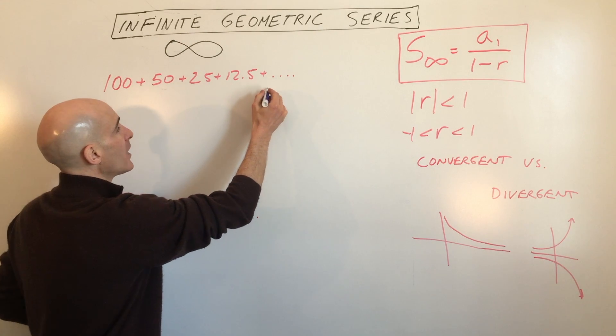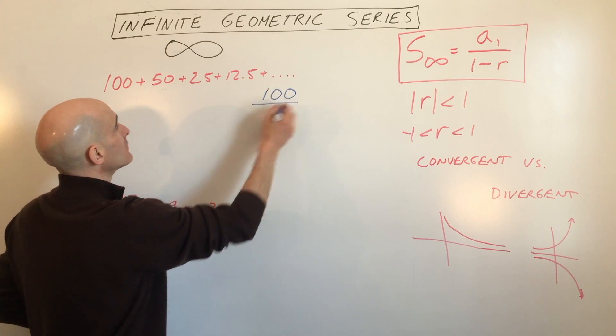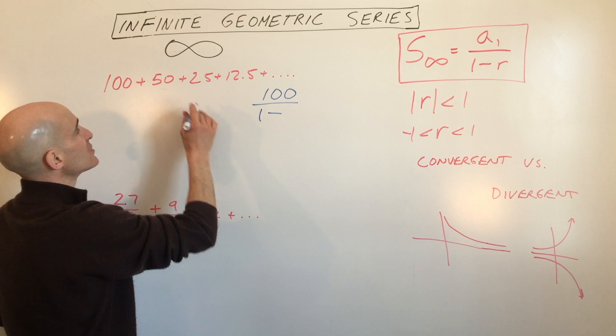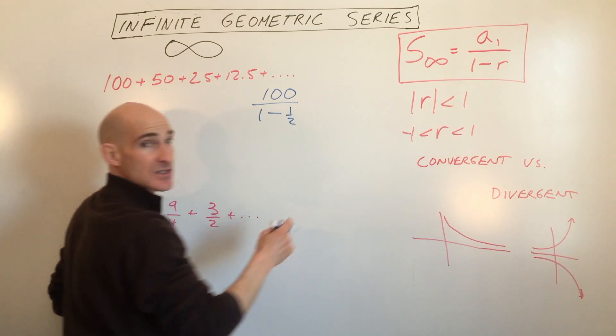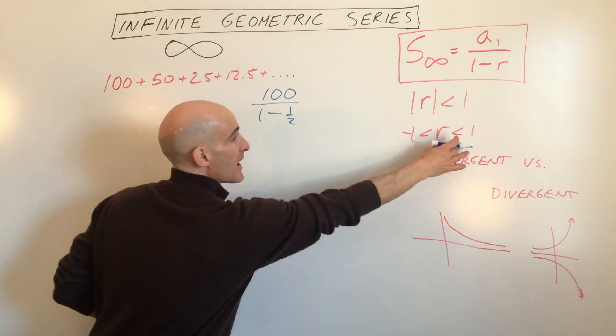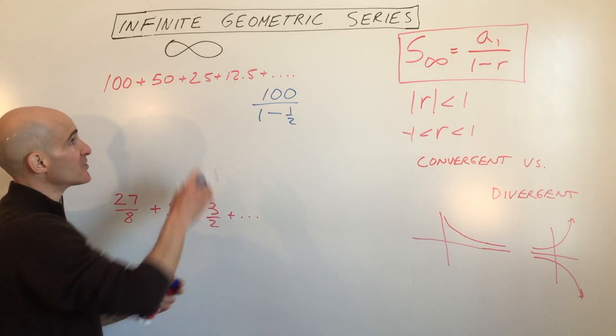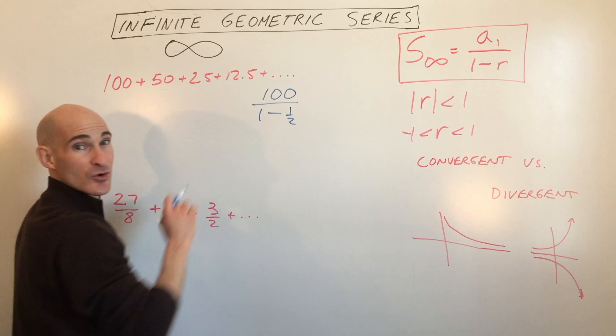The first term is 100. 1 minus the ratio, which we said was 1 half. And it meets our requirements that it's less than 1. It's in between negative 1 and positive 1. So it's going to converge. You can see this is getting smaller and smaller. It's approaching zero.